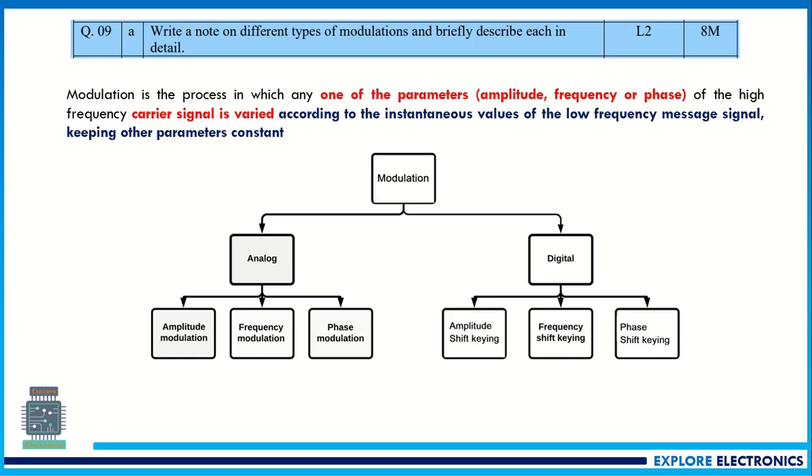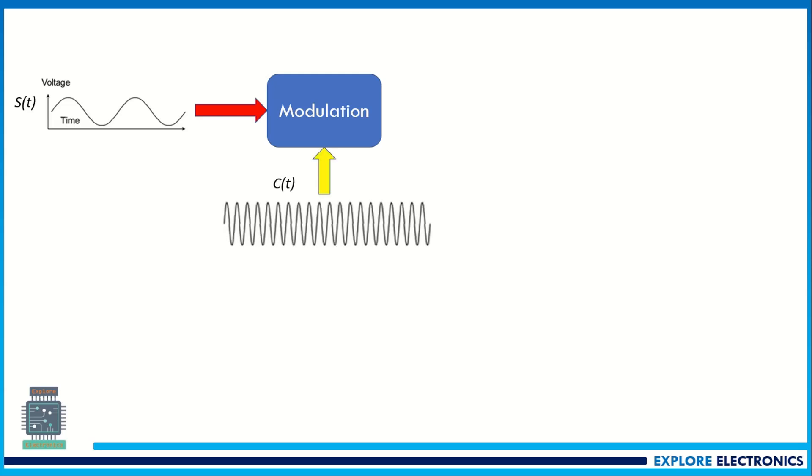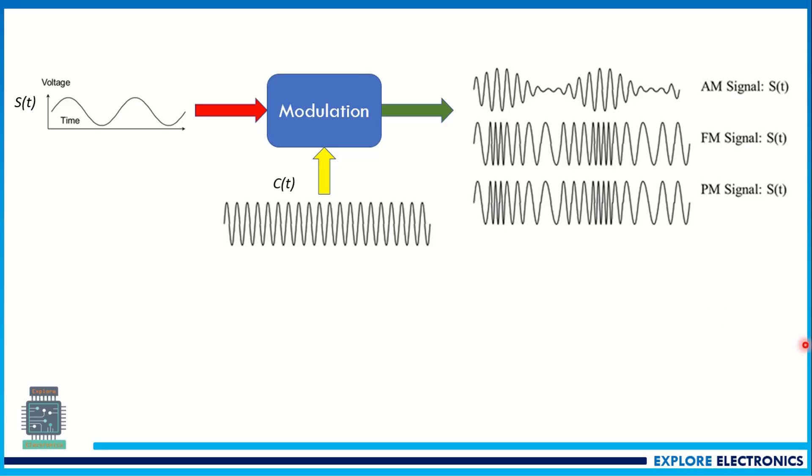Then briefly describe each in detail. Here the modulation is by taking the low frequency component and adding with the high frequency component carrier. So if it is amplitude modulation, this is how the modulated signal will be. If it is frequency modulation, this is the output signal. If it's phase modulation, this is the output.